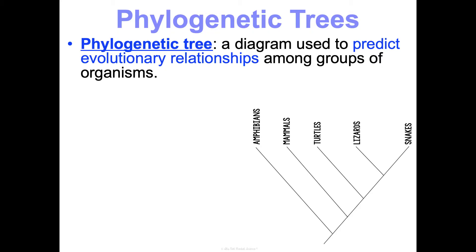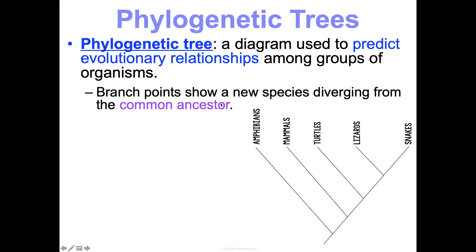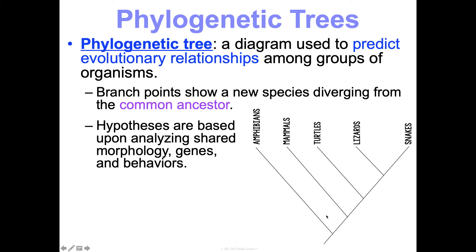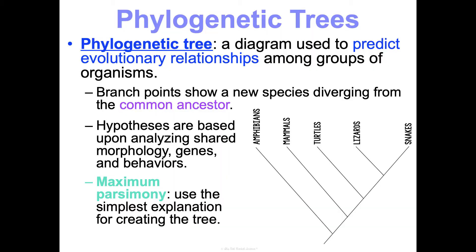The key distinction is that phylogeny is a historical thing — we're looking at evolutionary history and evolutionary relatedness. These trees show relatedness, and branch points show new species diverging off from the common ancestor. These trees are just hypotheses, based on analyzing data of shared morphology — structures like homologous and vestigial structures — shared genes, and shared behaviors. When constructing phylogenetic trees, evolutionary biologists try to use the principle of maximum parsimony, which means making the simplest explanation possible for creating the tree.